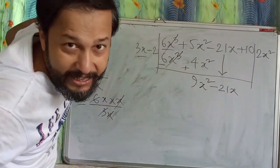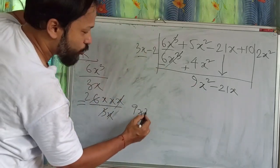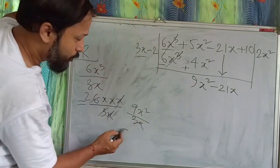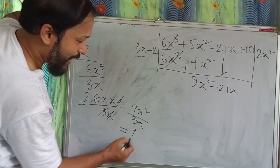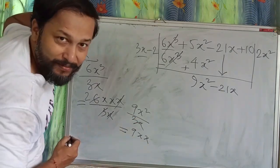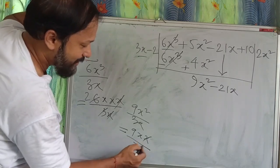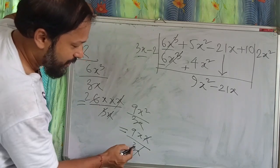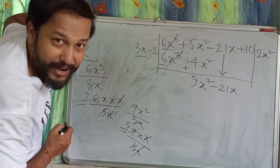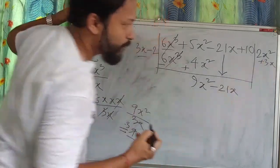Now the same technique — first term by first term: 9x² divided by 3x. Writing 9x² as 9×x×x divided by 3x — xx cancels and I get 3x. So I write plus 3x in the quotient.